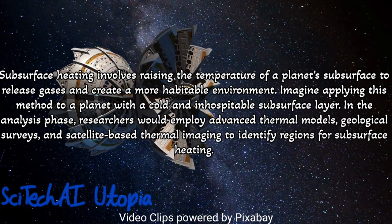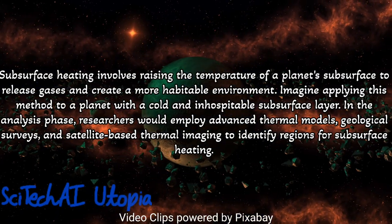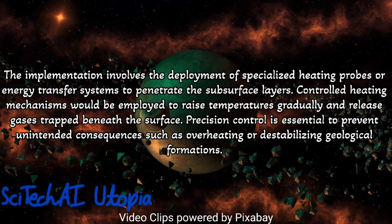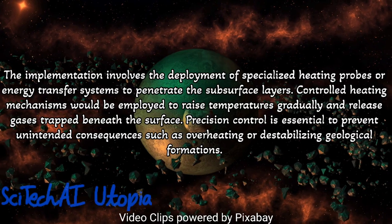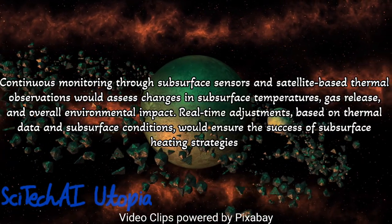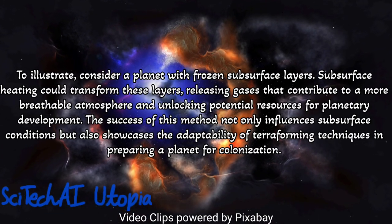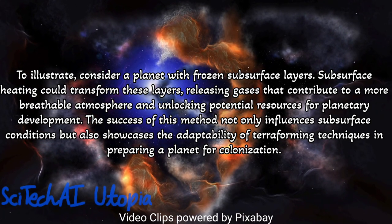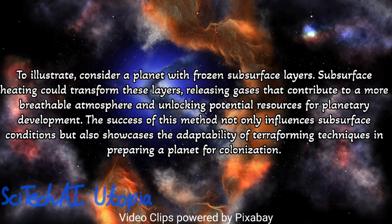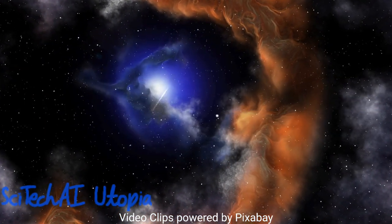Method 19: Sub-surface Heating. Conduct a thorough analysis of the target planet's subsurface composition, identifying regions with potential heat-retaining materials such as minerals or trapped gases. Develop a subsurface heating strategy to raise the temperature of specific areas, releasing gases or altering geological conditions to enhance habitability. Implement advanced drilling technologies capable of reaching significant depths to access subsurface layers without causing environmental harm. Design controlled heating systems, potentially using geothermal energy or other sustainable sources, to avoid unintended consequences such as excessive temperature increases or disturbances to the planetary mantle.